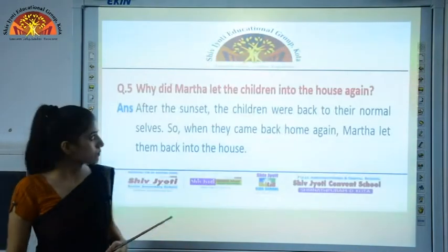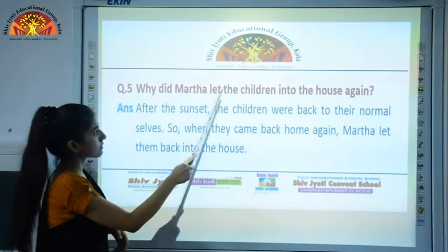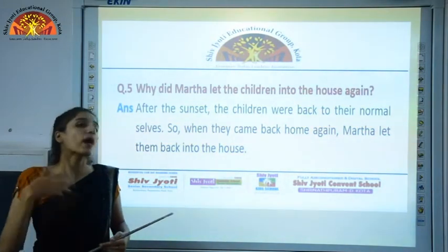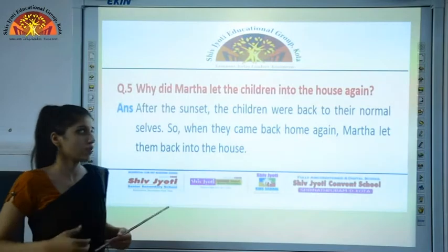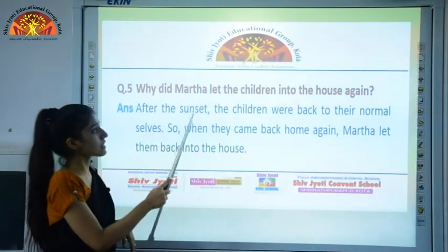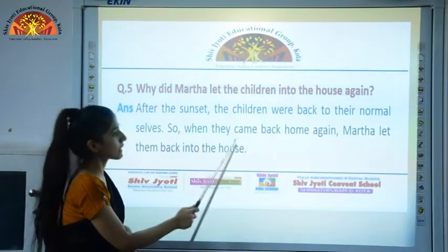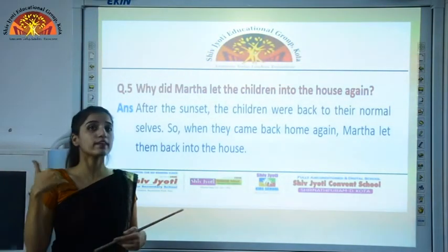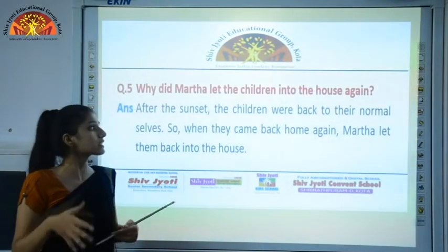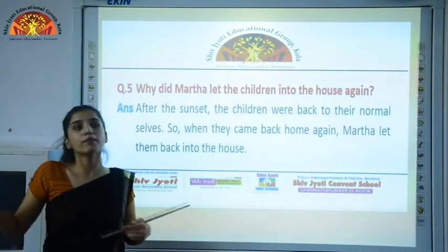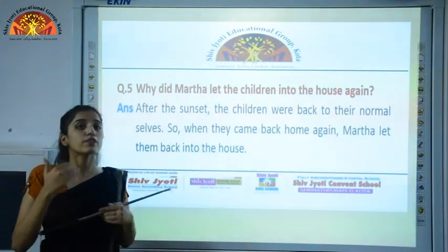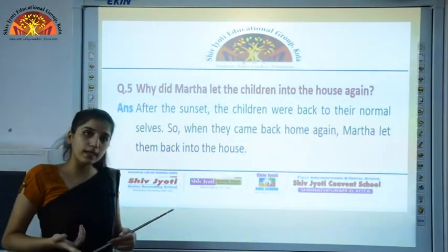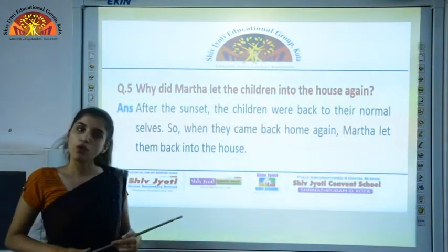Question number five: Why did Martha let the children into the house again? After the sunset, the children were back to their normal selves. When they came back home again, Martha recognized them and she let them enter their home again. As explained earlier, the children knew that after the sunset they would be back to their normal, original appearance.